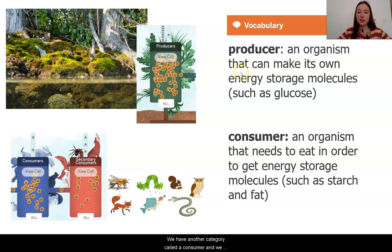We have another category called a consumer, and we heard in the article that there are two types. The primary consumers are things that are the consumer population of the plants. For example, we can see some pictures here. That would be things like rabbits and other organisms that are eating grass and plants.